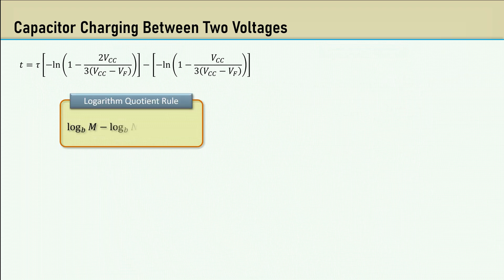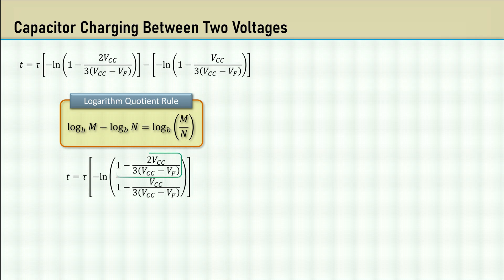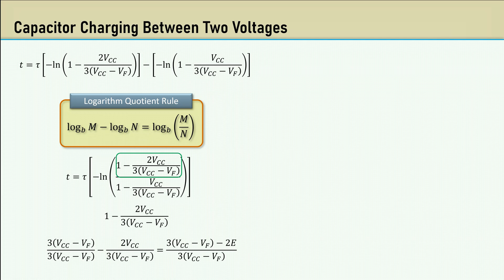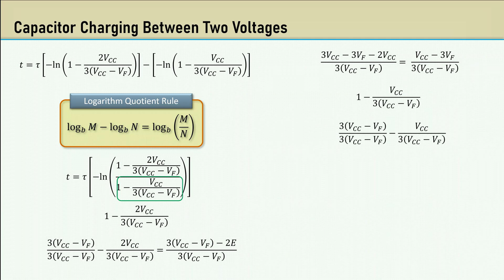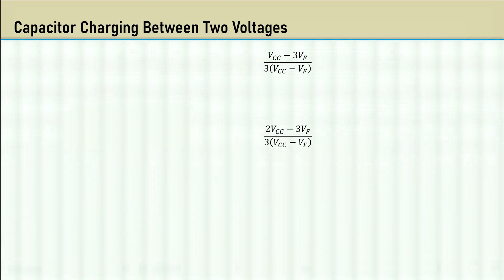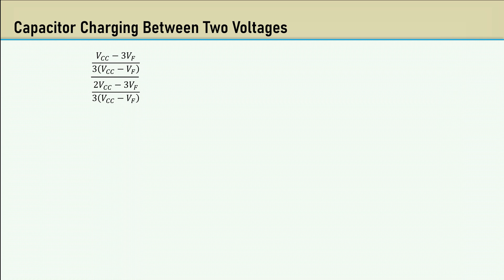We can use the logarithm quotient rule that says that log of M minus the log of N is the log of M over N, provided the logs have the same base. Let's work on the numerator first. We can join the 1 using a common denominator of 3 times VCC minus VF, then collecting like terms of VCC. Moving on to the denominator, we can do the same thing, and collecting like terms of VCC. I'll put the numerator and denominator back together, then simplify by cross multiplication. These terms cancel and leaves us with this.